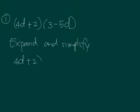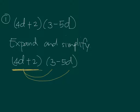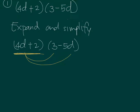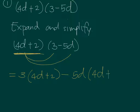With (4D + 2)(3 − 5D), we multiply these two. By the distributive law, we distribute (4D + 2) to 3 and then to 5D. So that gives us 3 times (4D + 2) minus 5D times (4D + 2). Notice how (4D + 2) is distributed to both 3 and 5D, and the minus sign is preserved because that's minus 5D.